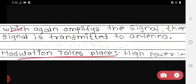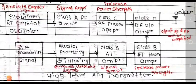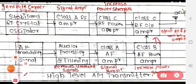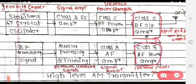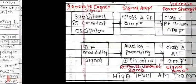The signal is transmitted to the antenna and modulation takes place at the high power level. The output of the class B AF power amplifier goes to the class C RF output amplifier, which amplifies the output of the audio frequency and radio frequency combined. This amplified signal then goes into the antenna. In this way, this is the detailed working of the high level AM transmitter.